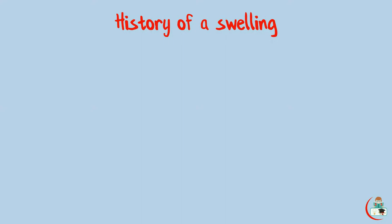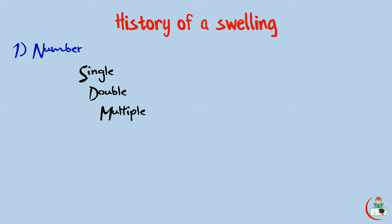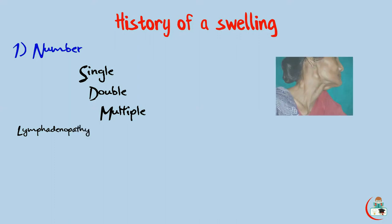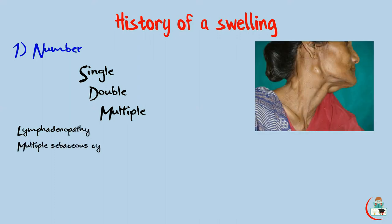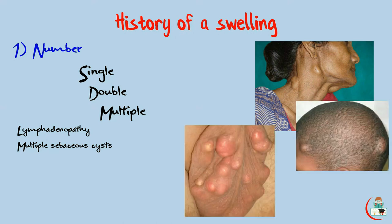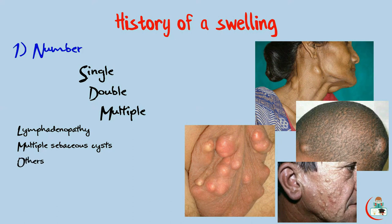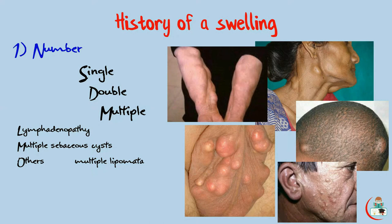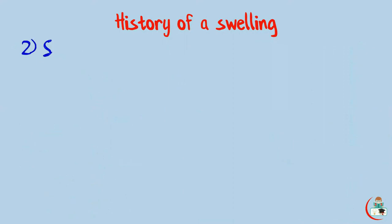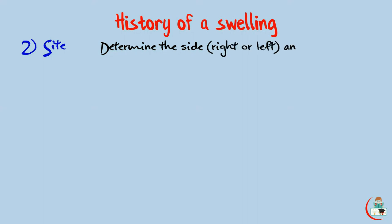Returning to the standard textbook method of history taking: first, ask about the number of swellings — whether single or multiple. Common multiple swellings include lymphadenopathy, multiple sebaceous cysts, multiple lipomata, multiple neurofibromatosis, multiple myeloma, multiple exostoses, etc. Next, ask about the site of the swelling: determine the side affected (right or left) and the exact location, which is very helpful in making an anatomical diagnosis.